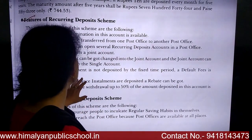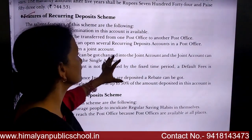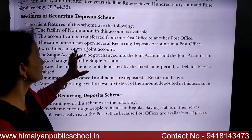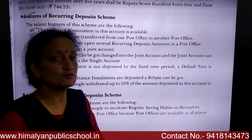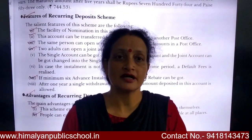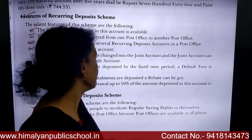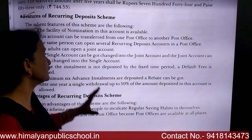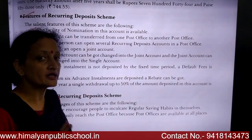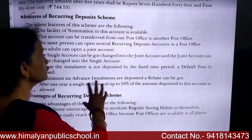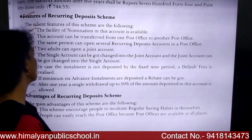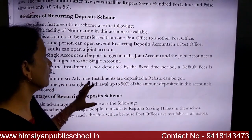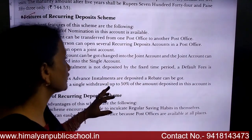Third feature: the same person can open several recurring deposit accounts in a post office. One person can open multiple RD accounts. Next feature: two adults can open a joint account. Also, a single account can be changed into a joint account.